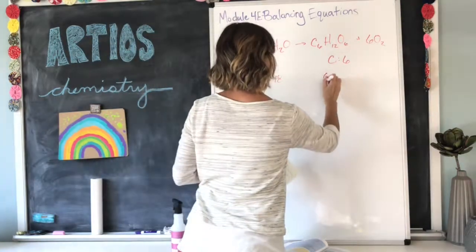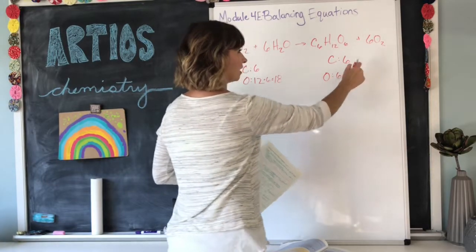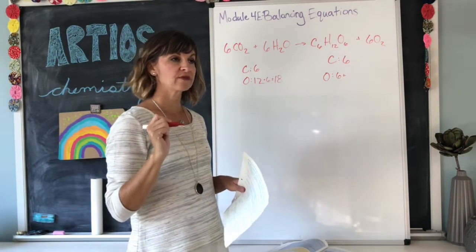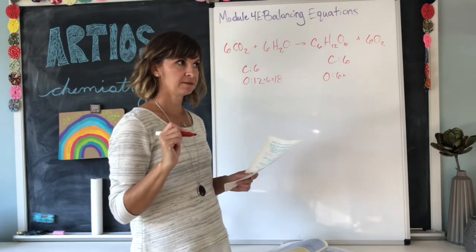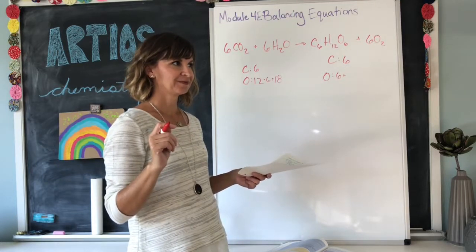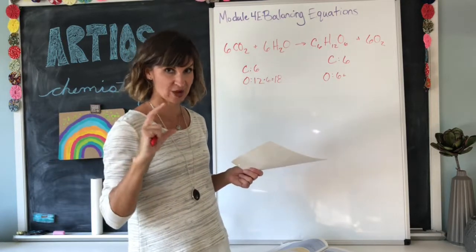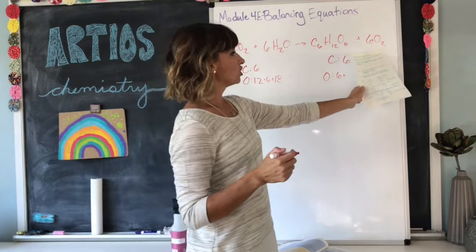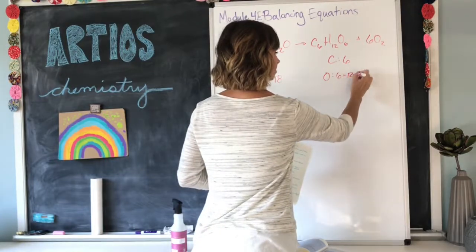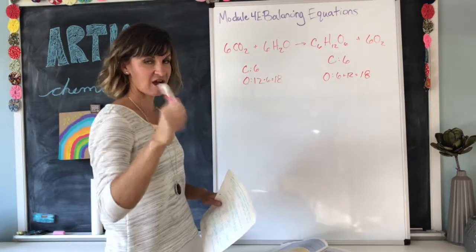Moving over to the product side, oxygen in the first compound, there are six of them, plus in the O2, remember, oxygen is one of those diatomic molecules that likes to exist as a twin. So, you're never going to see just the O. It's going to be O2. So, we have O2 here, and we have six O2 molecules present. So, six times two is 12. So, again, we have six plus 12 equals 18 total oxygens. So, the oxygens match up. The oxygens are balanced.